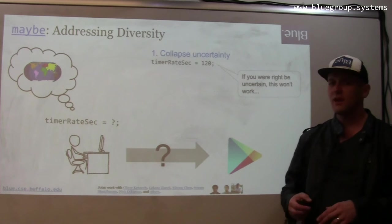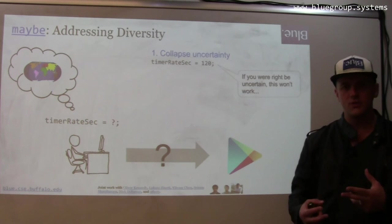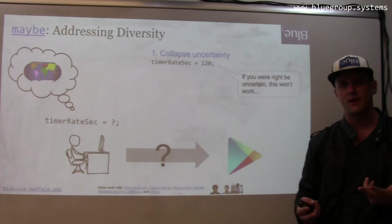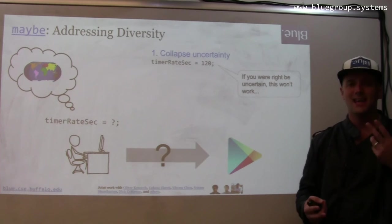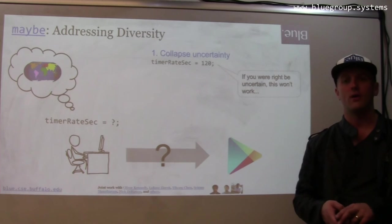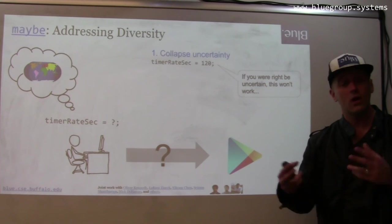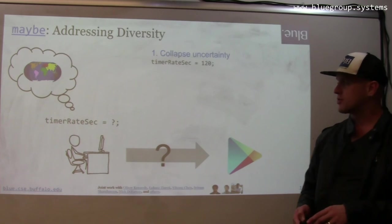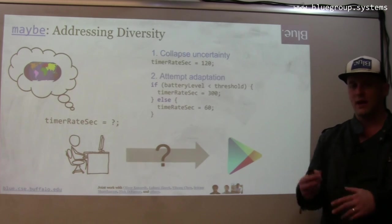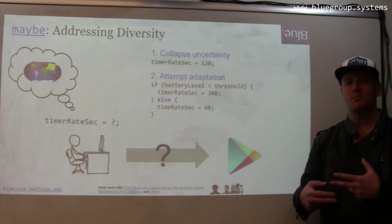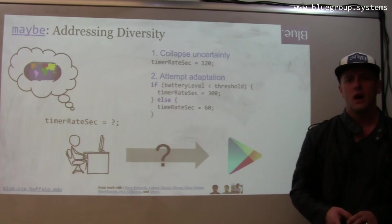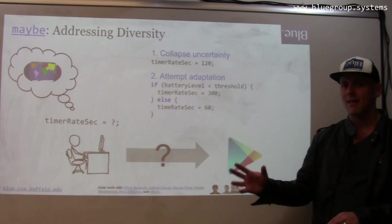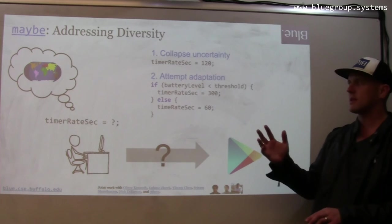Unfortunately today, if I want to think about how to set this timer, I don't have many good options. Option one is to set one value and hope it works everywhere — but if you're uncertain about what value to choose, it probably won't work well everywhere. The other option is to write adaptive code. When we looked at the Android code base, we didn't see much of this, but it's certainly an option.